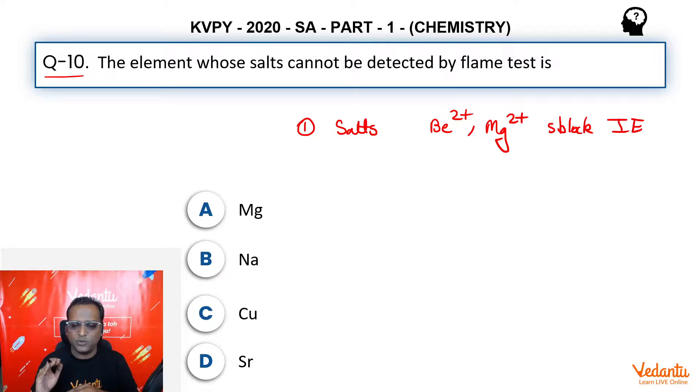Does it mean that there is no excitation, de-excitation of electron in beryllium 2 plus? There is. Or in Mg 2 plus, there is. But it is not in the visible region. So they do not impart color to flame test.